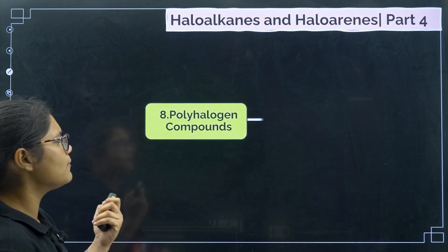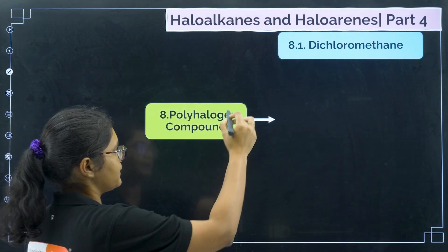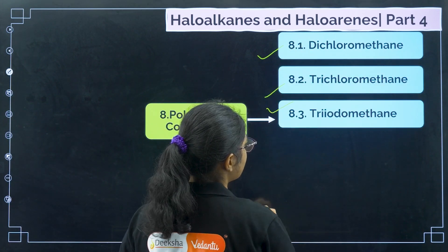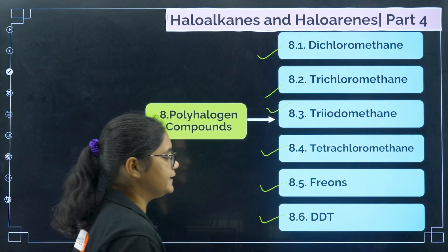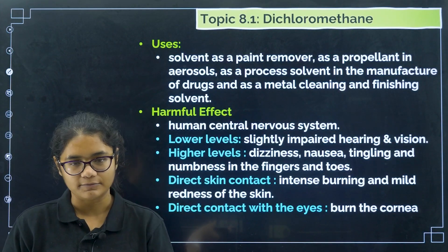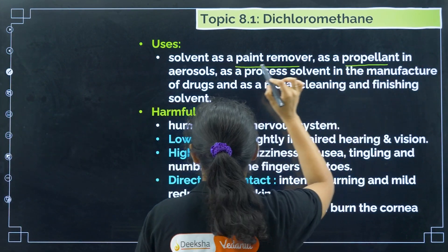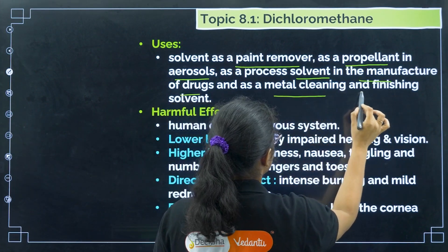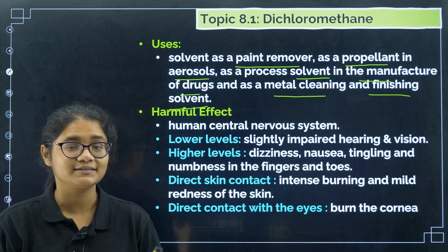There are six polyhalogen compounds you have to prepare: dichloromethane, trichloromethane, triiodomethane, tetrachloromethane, freons, and DDT. Coming to the first one, dichloromethane — you should know its uses and harmful effects. Its uses are: it is used as a paint remover, a propellant in aerosols, a process solvent in the manufacture of drugs, and as a metal cleaning and finishing solvent. Generally, the most important use is as a solvent.